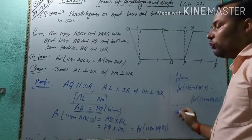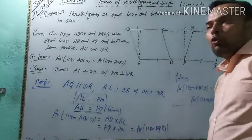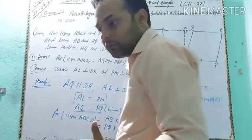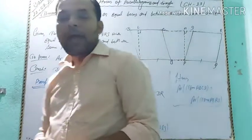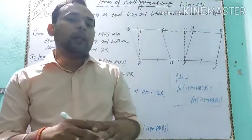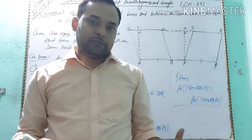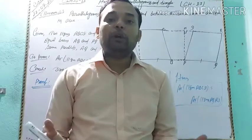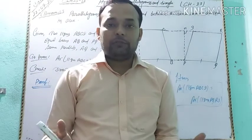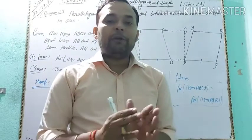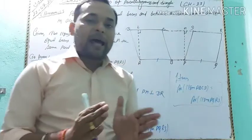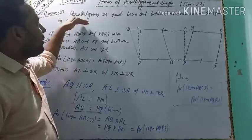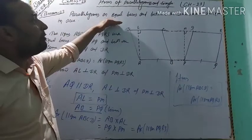So, two parallelograms having equal bases and between the same parallels are equal in area. Parallelograms on equal bases and between the same parallels are equal in area.